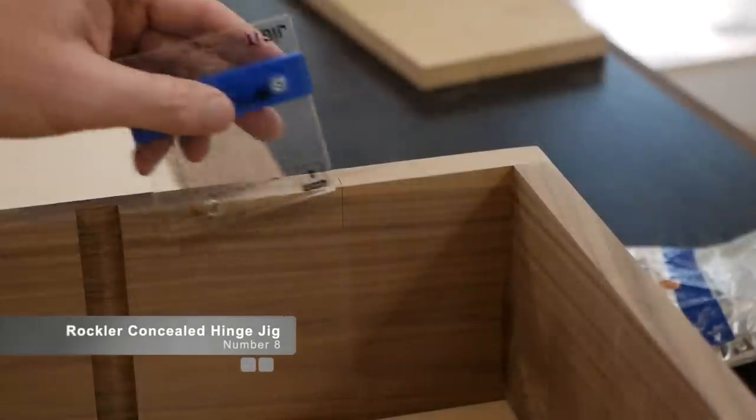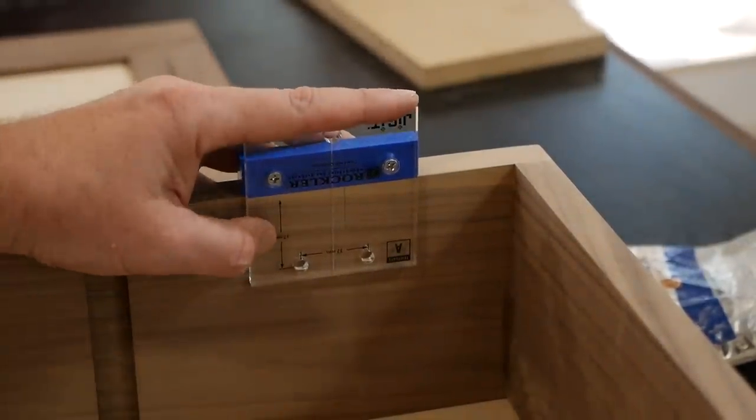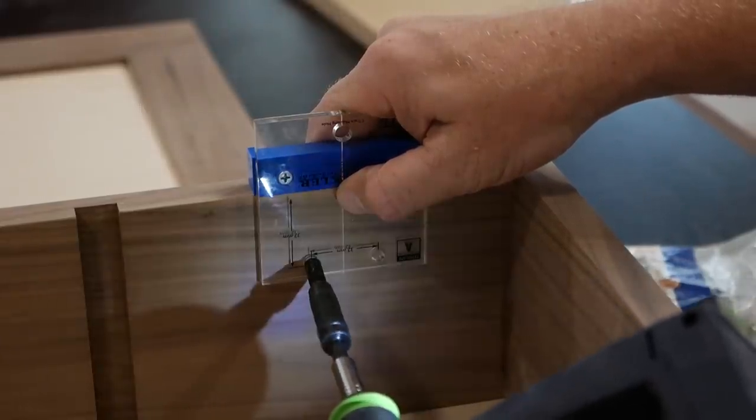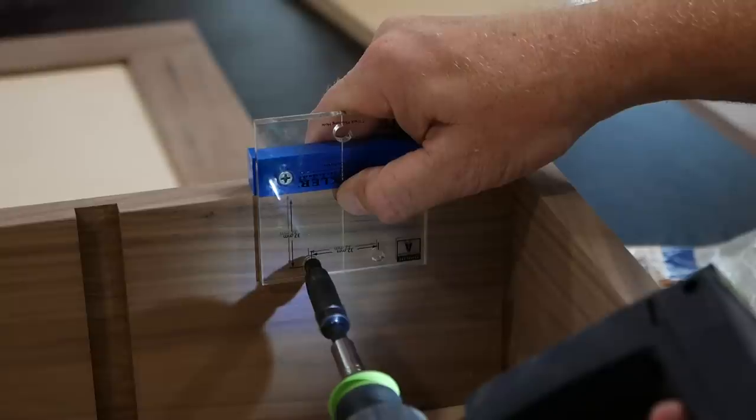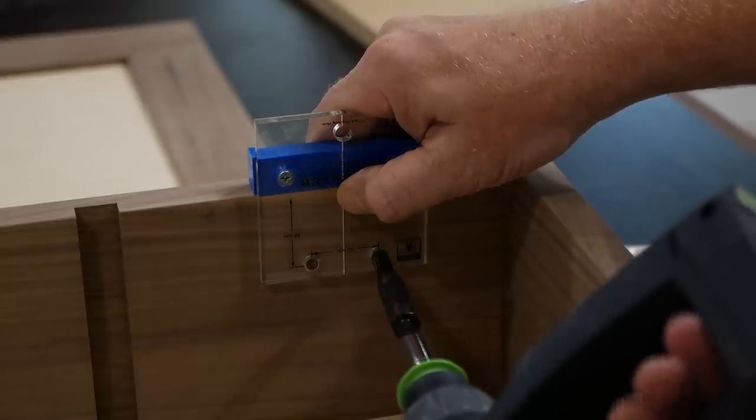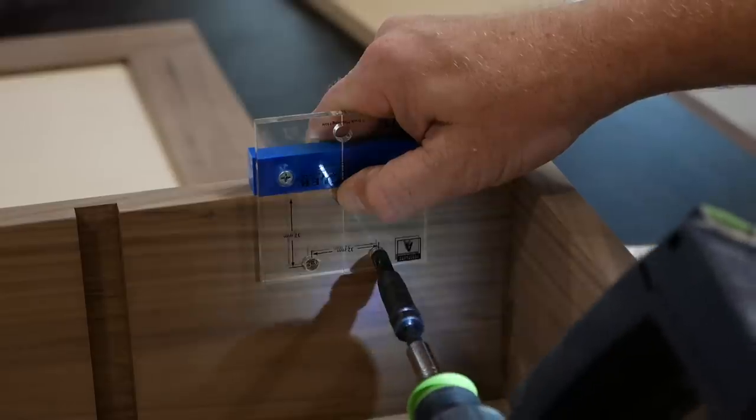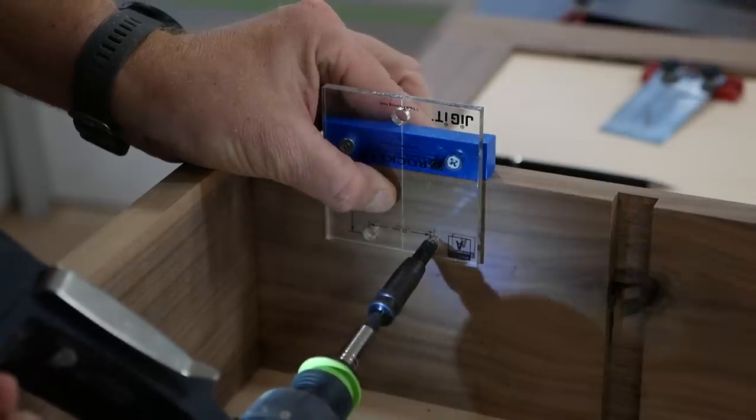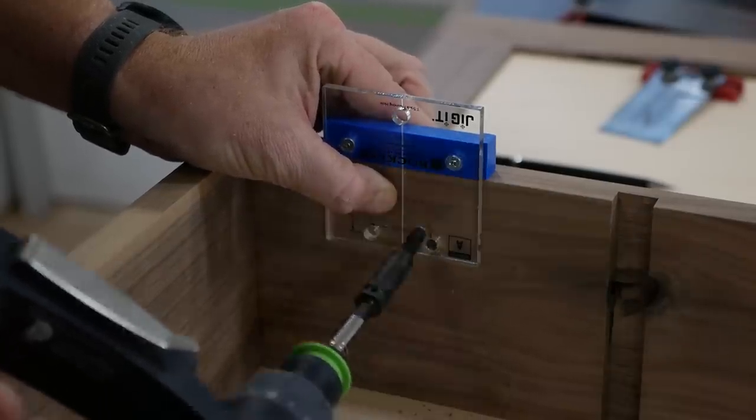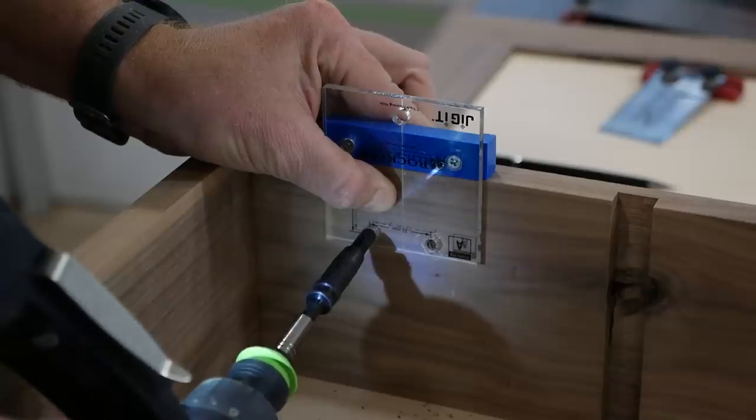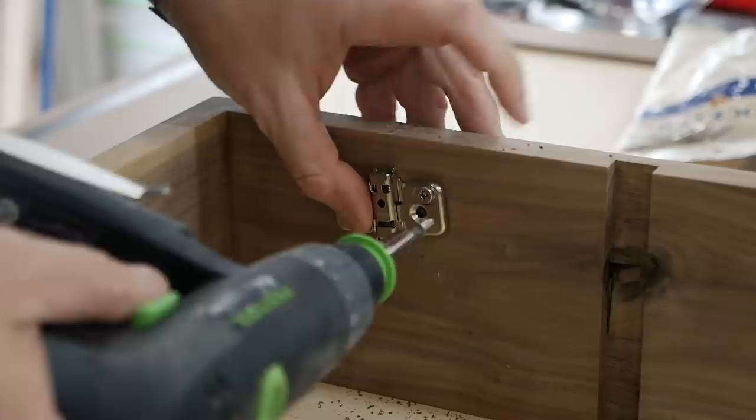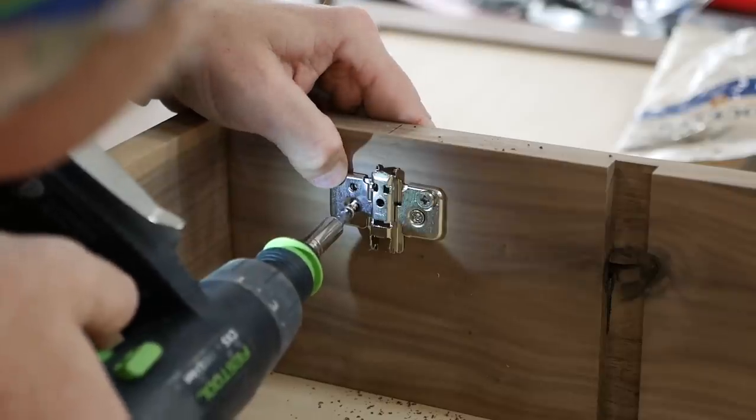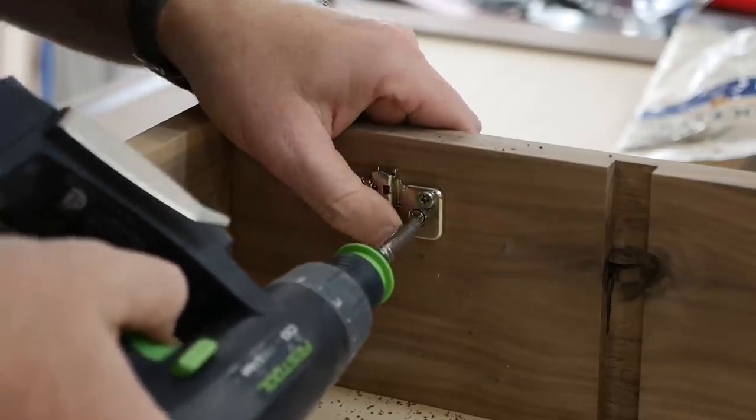Item number eight is the Rockler Concealed Hinge Jig. They make these in multiple different layouts to match the layouts needed for different Euro-style hinges that require hinge plates that will be installed inside of the cabinet. The thing that's great about this is that it takes all the guesswork out of it. It makes the installation really effortless, very quick, because all you have to do is mark a line on the cabinet itself and the door. You line this up. You drill the holes out that match the plate that you're using. Then you can go back and install that plate. It's really that simple. Comes out perfect every time. Like I said before, they do have various different jigs that you can buy to match different hinges.